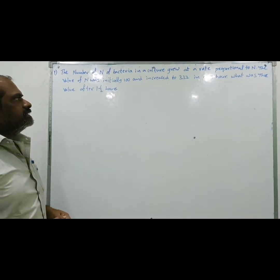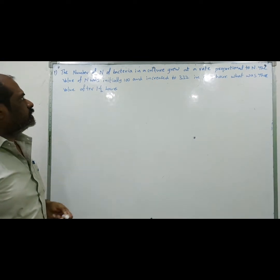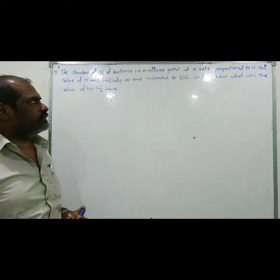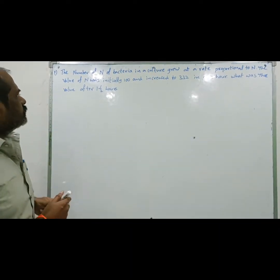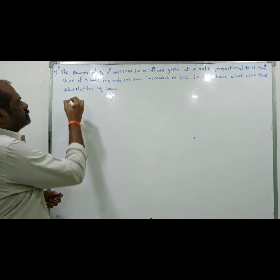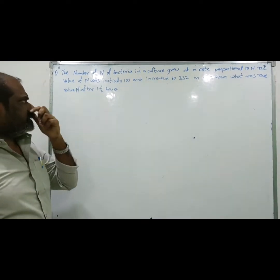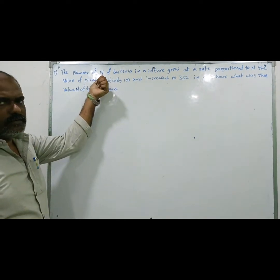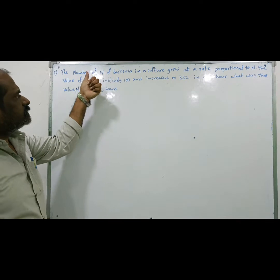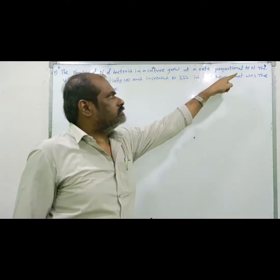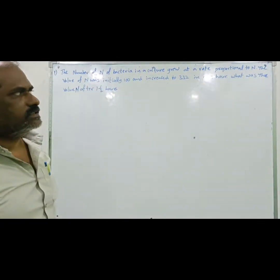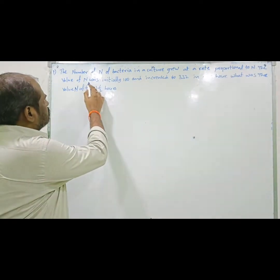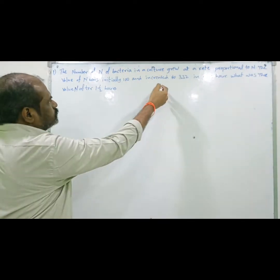Problem: The number of bacteria n in a culture grew at a rate proportional to n. The value of n was initially 100 and increased to 332 in one hour. The amount of substance is n, so the rate of change of n is proportional to n. This follows the law of natural growth, so dn/dt is used.